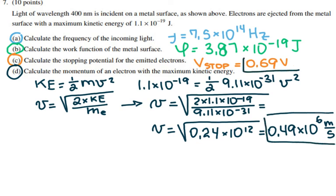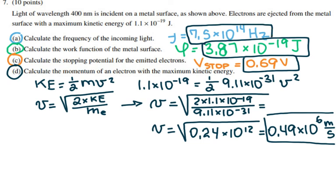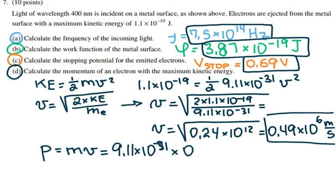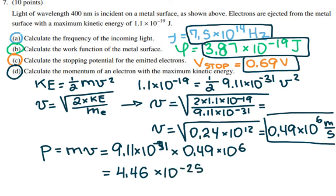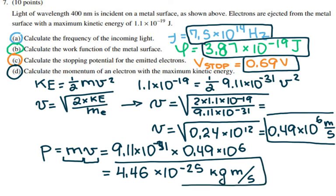We've now found the values asked in the problem. The last one we need is momentum. Momentum equals mass times velocity. So p = 9.11×10⁻³¹ kg times 0.49×10⁶ m/s, which gives a momentum of 4.46×10⁻²⁵ kilogram meters per second. That is the momentum of these electrons.